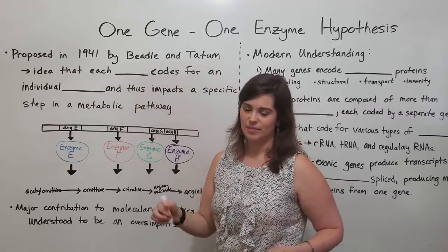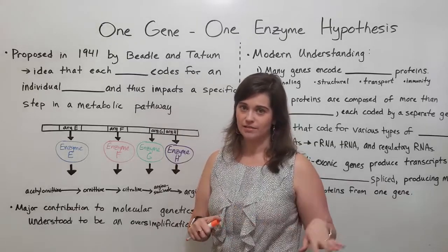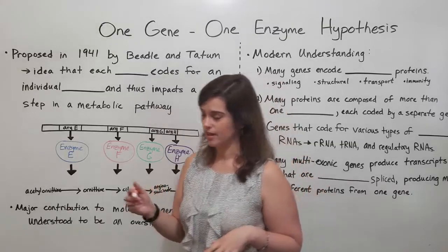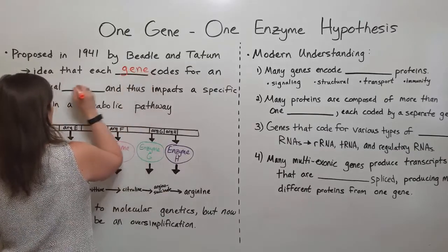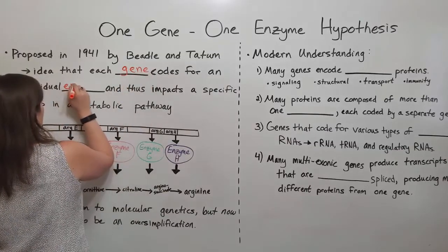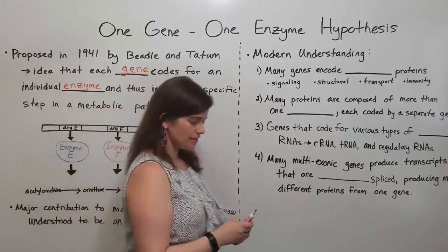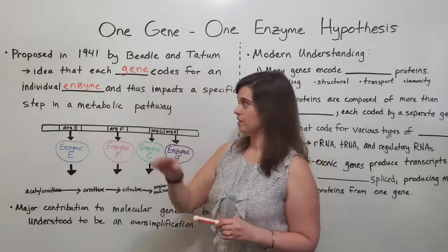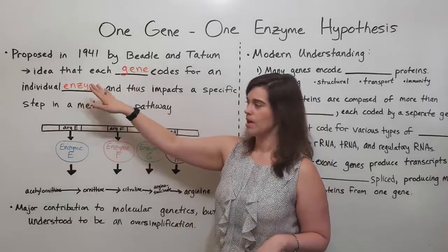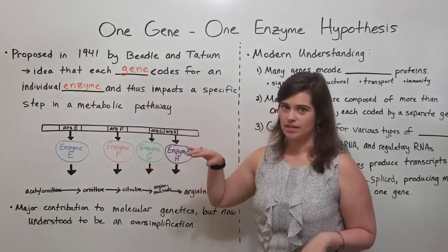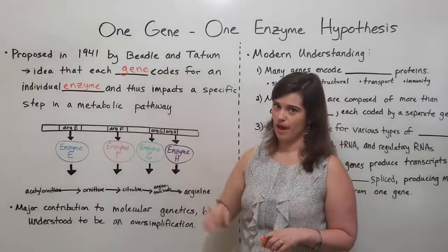They had this idea that each gene in the genome coded for an individual enzyme, and specifically that each one of these genes coded for each individual enzyme, and each individual enzyme thus impacted a specific step in a metabolic pathway.